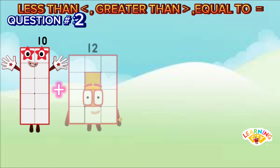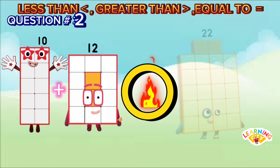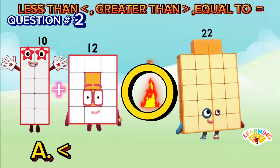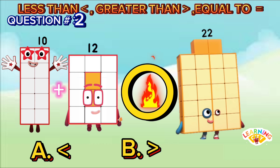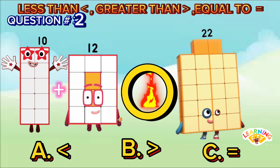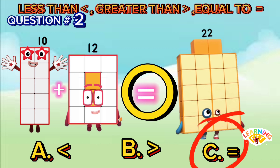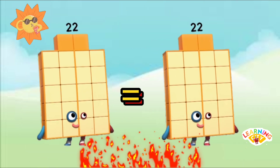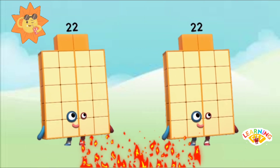10 plus 12 equals 22. Is it A less than, B greater than, or C equal to? The answer is C equal to — 10 plus 12 equals 22, and 22 is equal to 22.